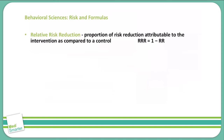We have relative risk reduction. Relative risk reduction is the proportion of risk that's reduced and can be attributed to the intervention, comparing that to the control. To calculate relative risk reduction, we're going to do 1 minus our relative risk, which we talked about earlier.